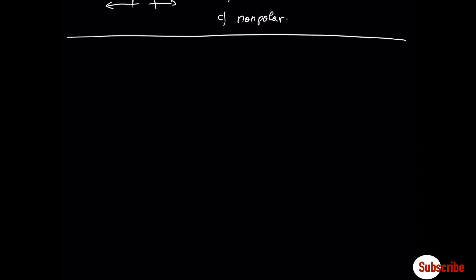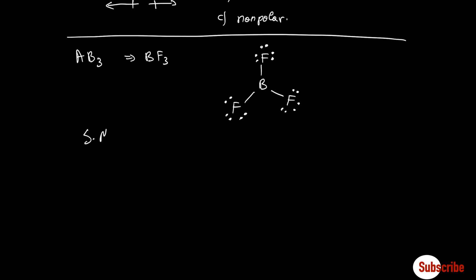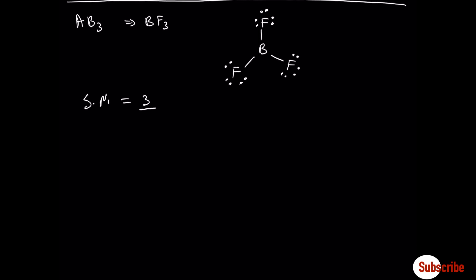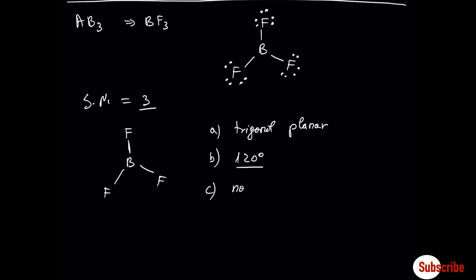Let's move now to another example: AB3. A typical example is boron trifluoride. First we have to draw the Lewis structure. The steric number for this compound is 3. According to VSEPR theory, this compound has a trigonal planar geometry. The angle is 120 degrees, and the molecule is nonpolar because dipole moments cancel each other.